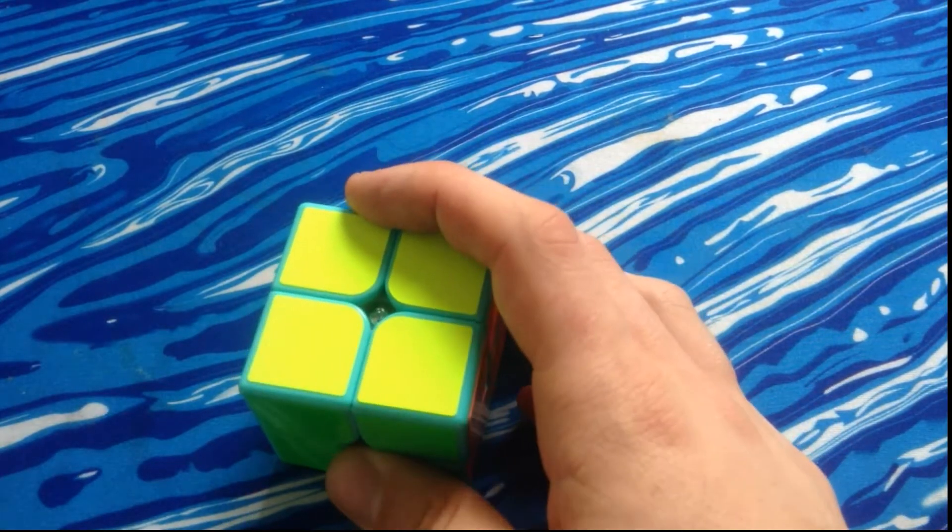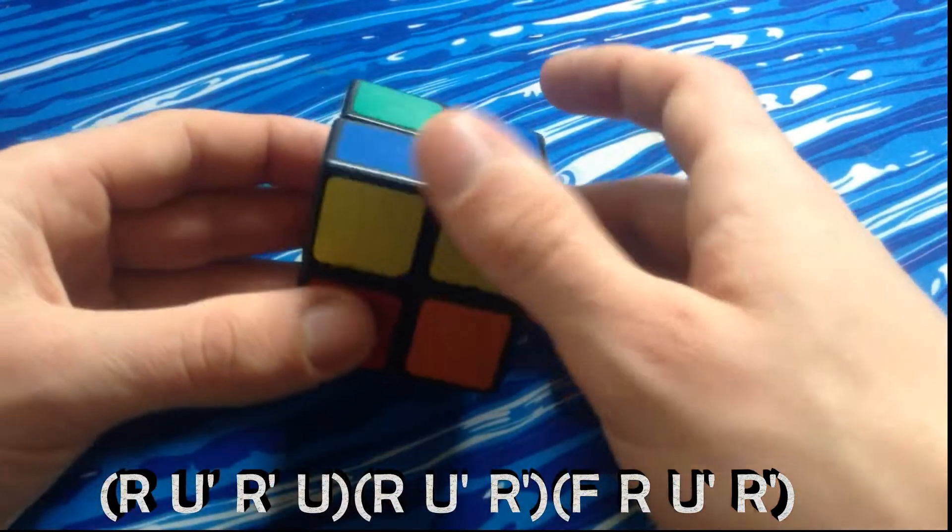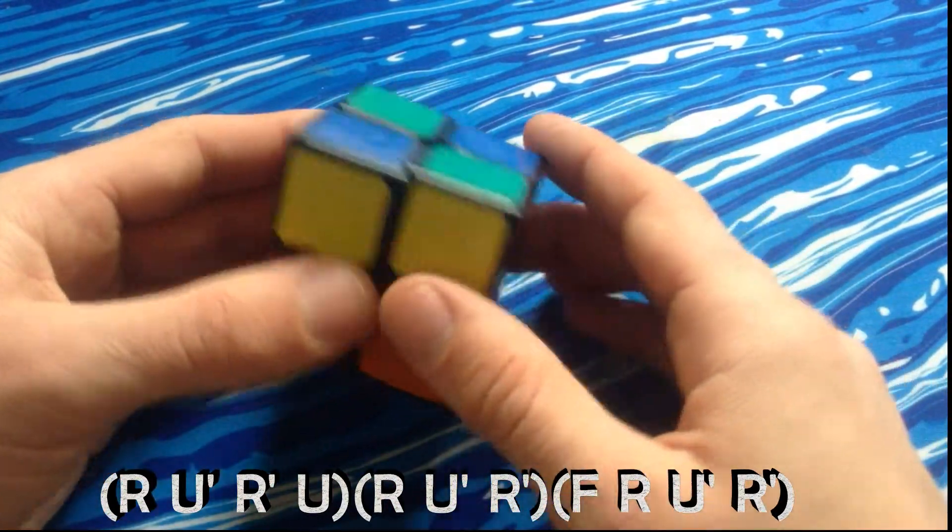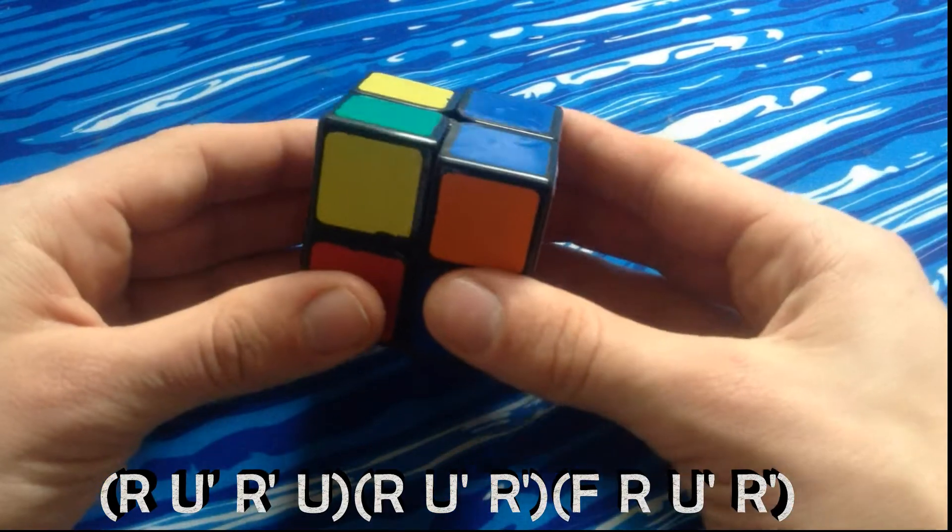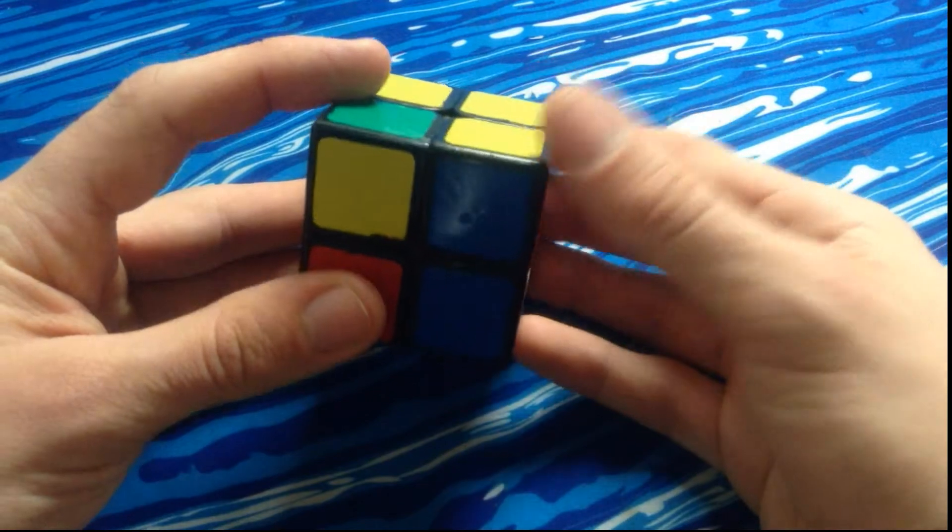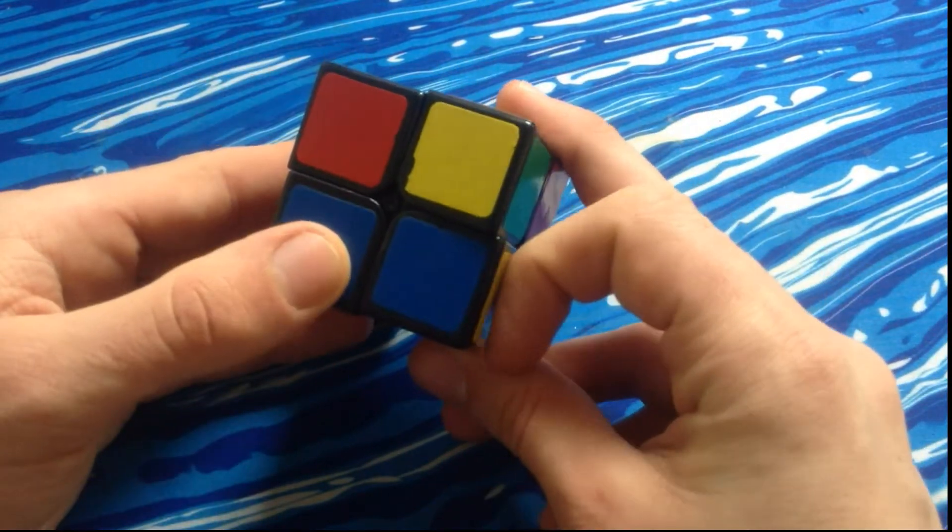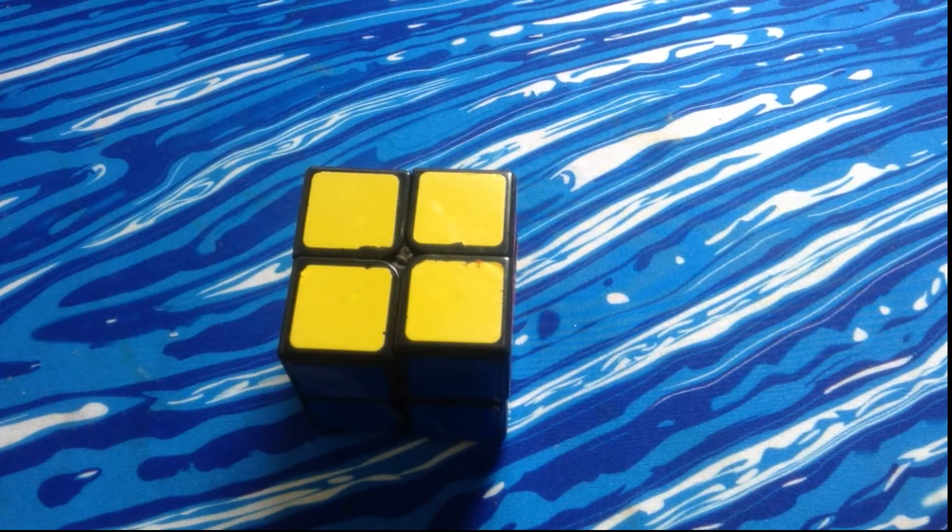Now interestingly about this algorithm, if you do the inverse of it you get yourself another Pi case. So R U R' U' R U' R' and then F R U' R'. I don't know if I called that right, but that's the way you can remember that one with triggers.